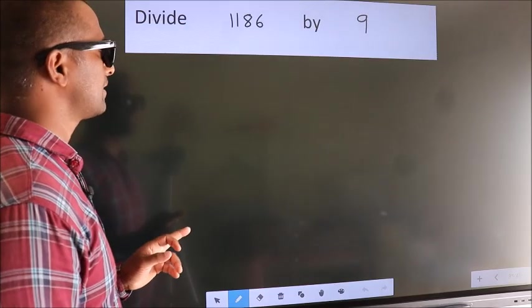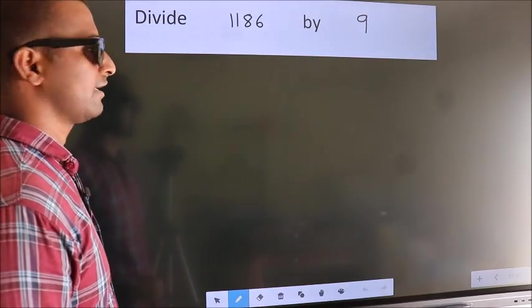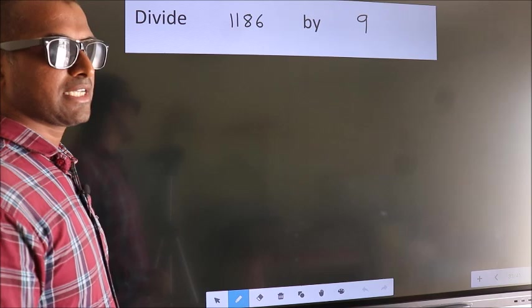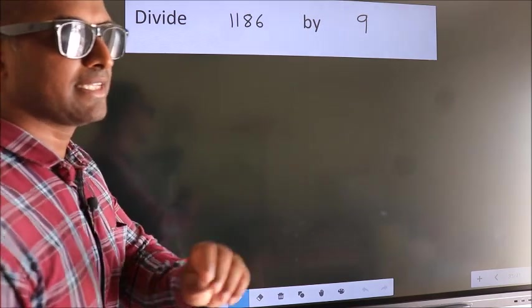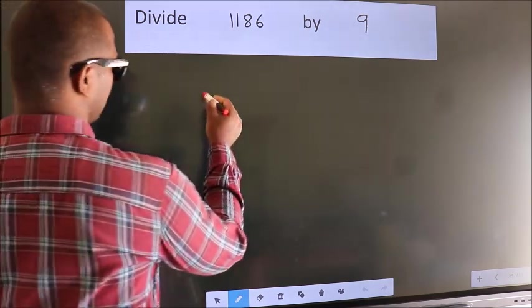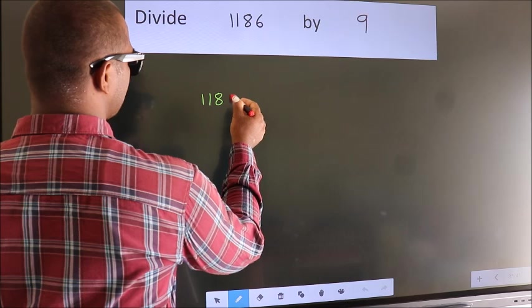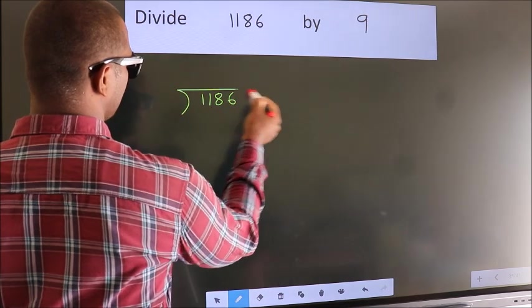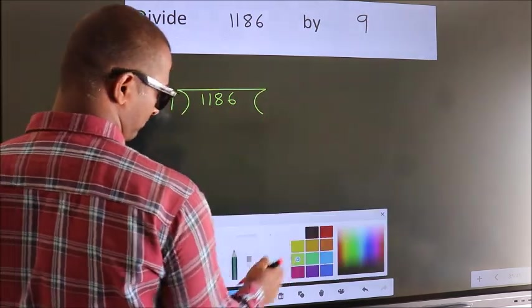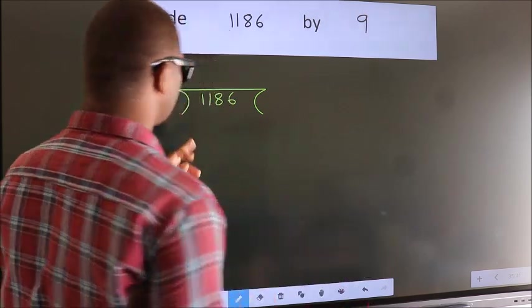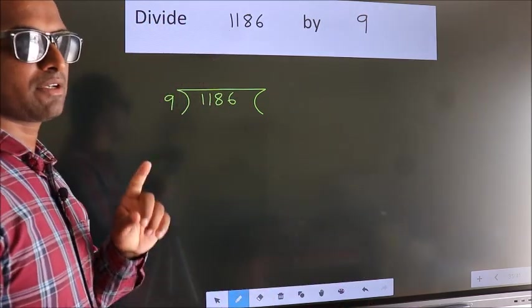Divide 1186 by 9. To do this division, we should frame it in this way. 1186 here. 9 here. This is your step 1.